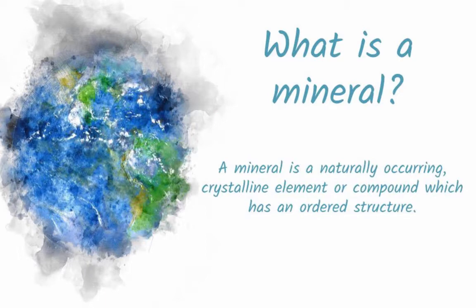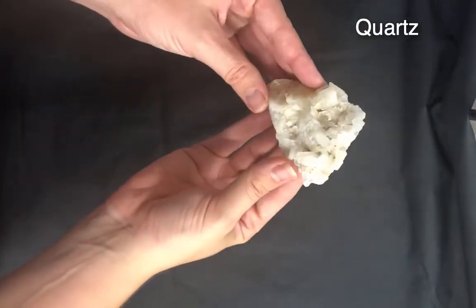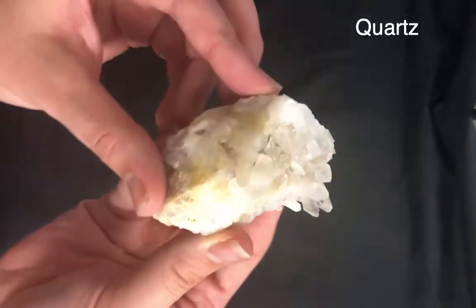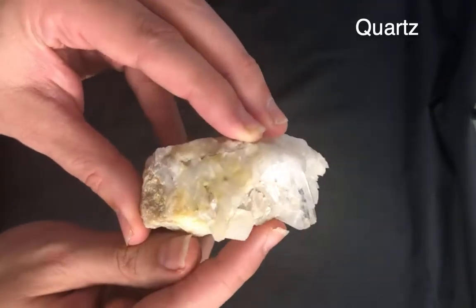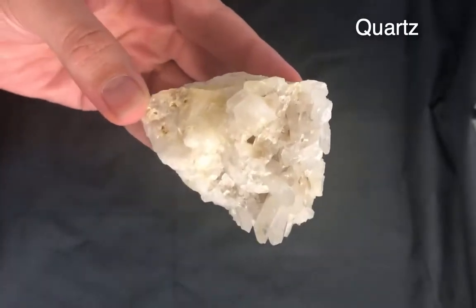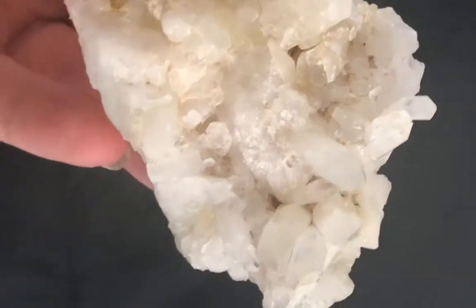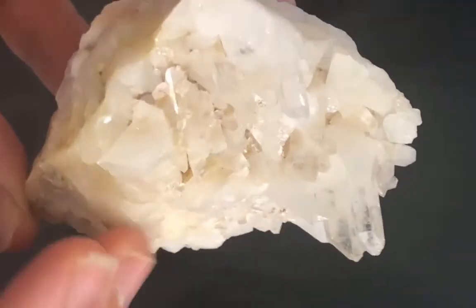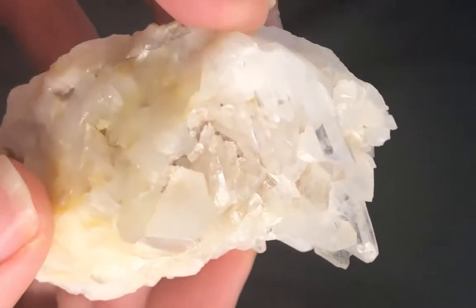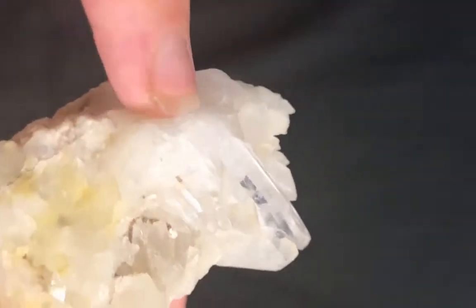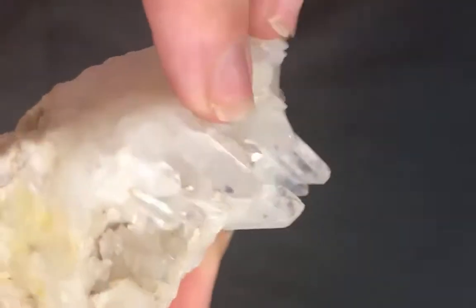A mineral is a naturally occurring element or compound. It has an orderly internal structure and is in a crystal form. I have a few of these minerals to show you. A really common one is quartz — you can see the beautiful crystal structure here. Look at all those beautiful crystals; you can see that they're actually quite an ordered thing, with the sides being flat and straight.